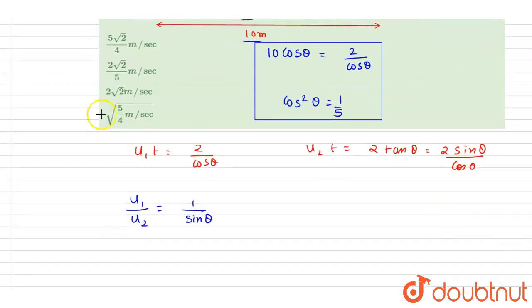Cos theta is 1 by 5. So as you got the cos theta, you can also write down sin squared theta is 1 minus cos squared theta, that is 1 minus 1 by 5, that will be 4 by 5.